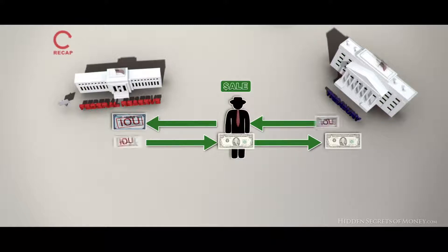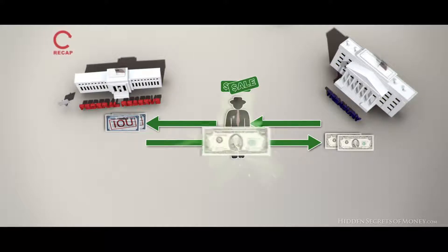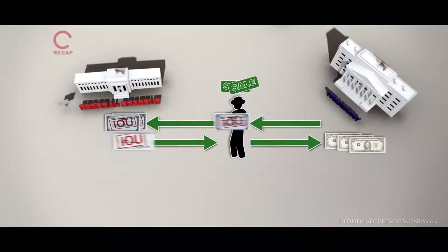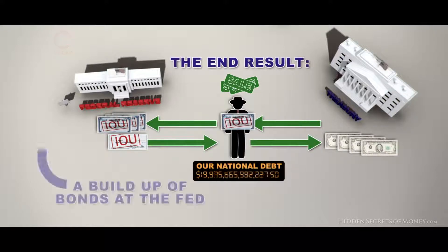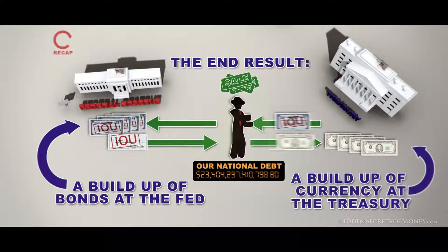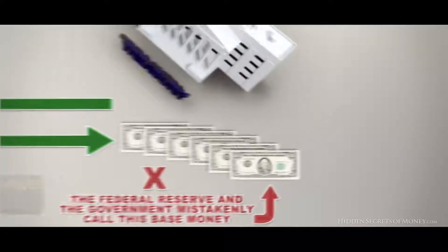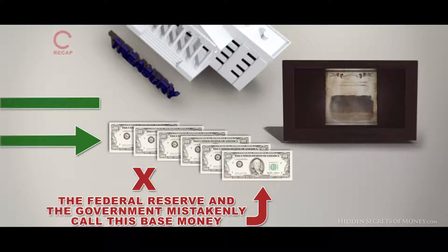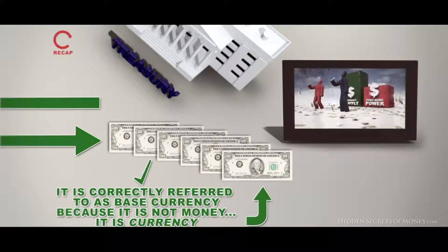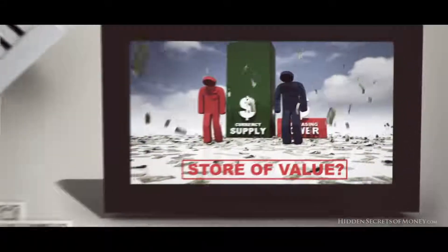So what's really happening is the Federal Reserve and the Treasury are just swapping IOUs, using the banks as middlemen, and abracadabra, currency magically springs into existence. This process repeats over and over again, enriching the banks and indebting the public by raising the national debt. This process is also where all paper currency comes from. The Federal Reserve and the government mistakenly call it base money, but I will correctly refer to it as base currency, because it is currency, not money, and there is a big difference.